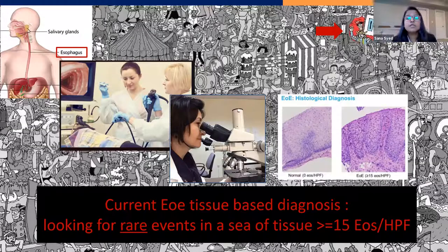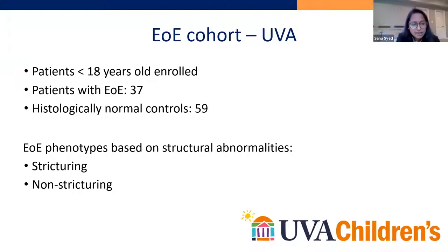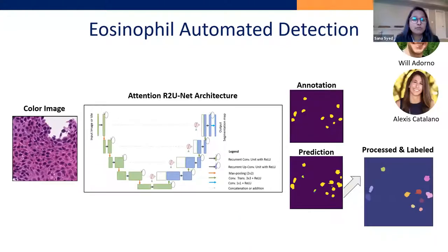There's plenty of severe disease in which you have 100 or 200 eosinophils per high power field, but there are all these edge cases in which an AI algorithm would be valuable. In our cohort of under-18 children, we took 37 patients with EOE and 59 who had histologically normal esophageal tissue. We followed a six-to-twelve-month clinical outcome to say: based on diagnostic biopsies that were treatment-naive at the time of diagnosis, could you predict which patient would go on to develop a stricturing versus non-stricturing phenotype?